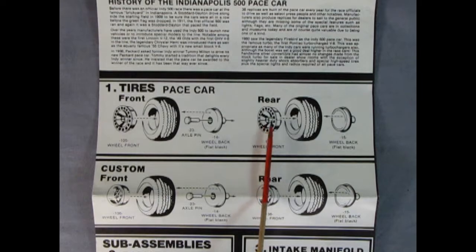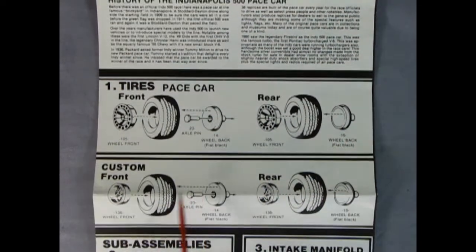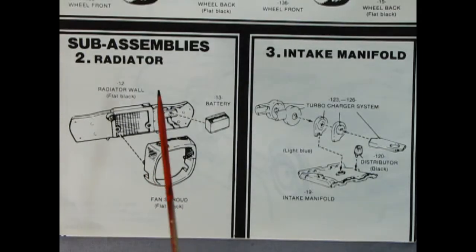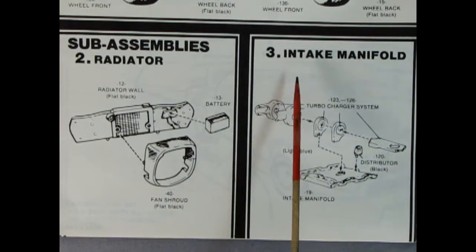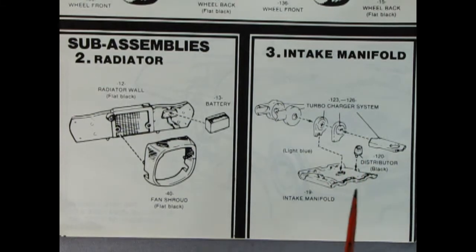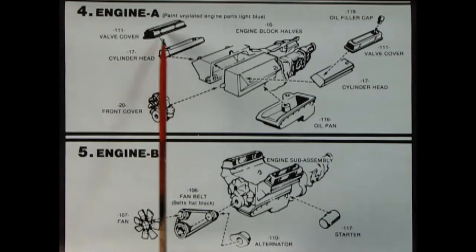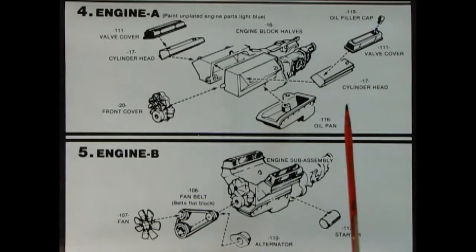Then we can see the tires - you've got the original stock wheels with the tire, backing plate and axle pin. For the rear we get that nice wheel, tire and wheel back, and custom wheels as well so you could really spice up your car. Panel two shows the sub-assembly with radiator wall, fan shroud, battery, and step three is the intake manifold with all the turbocharger pieces, distributor.